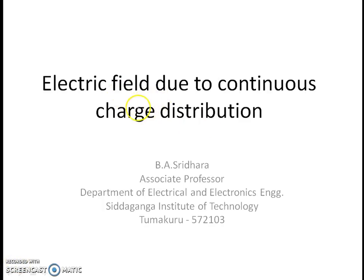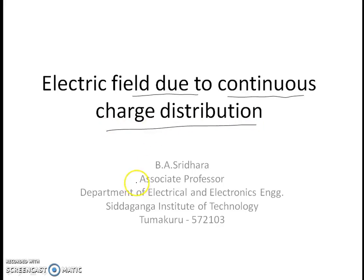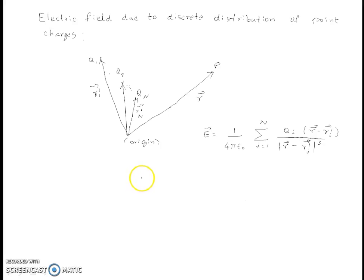In this session, we will discuss about the electric fields due to continuous charge distribution. Before discussing about the electric fields due to continuous charge distribution, let us consider a distribution of point charges — q1, q2, qn — as shown in this figure.